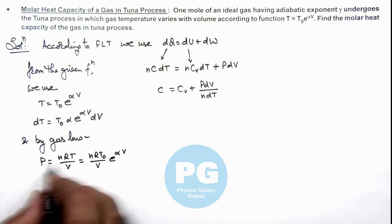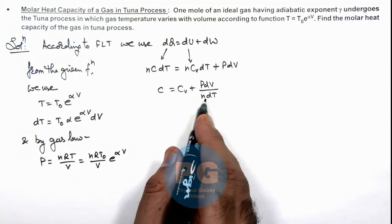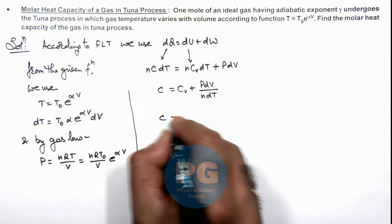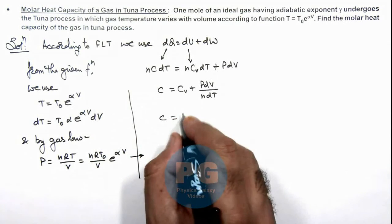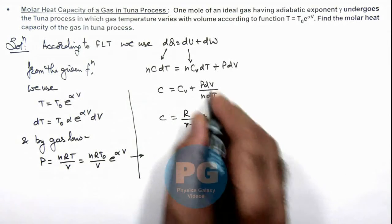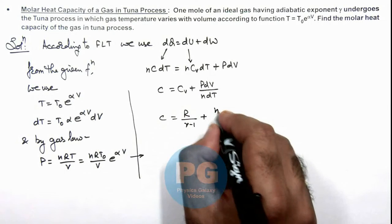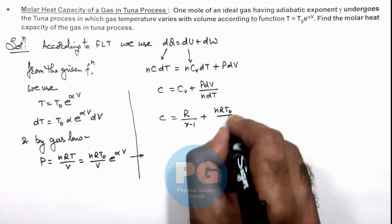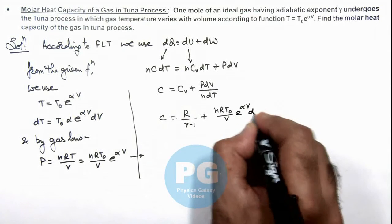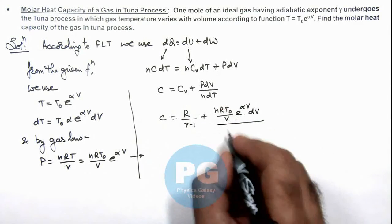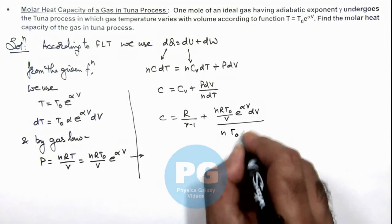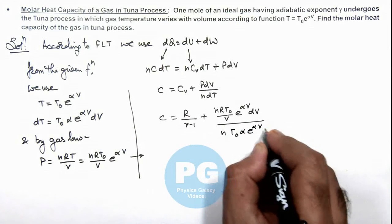Now we can substitute the value of P and dT. The value of C we are getting: C = R/(γ-1) plus pressure we are writing as (nRT₀/V)·e^(αV)·dV, divided by n·dT which we can write as T₀α·e^(αV)·dV.